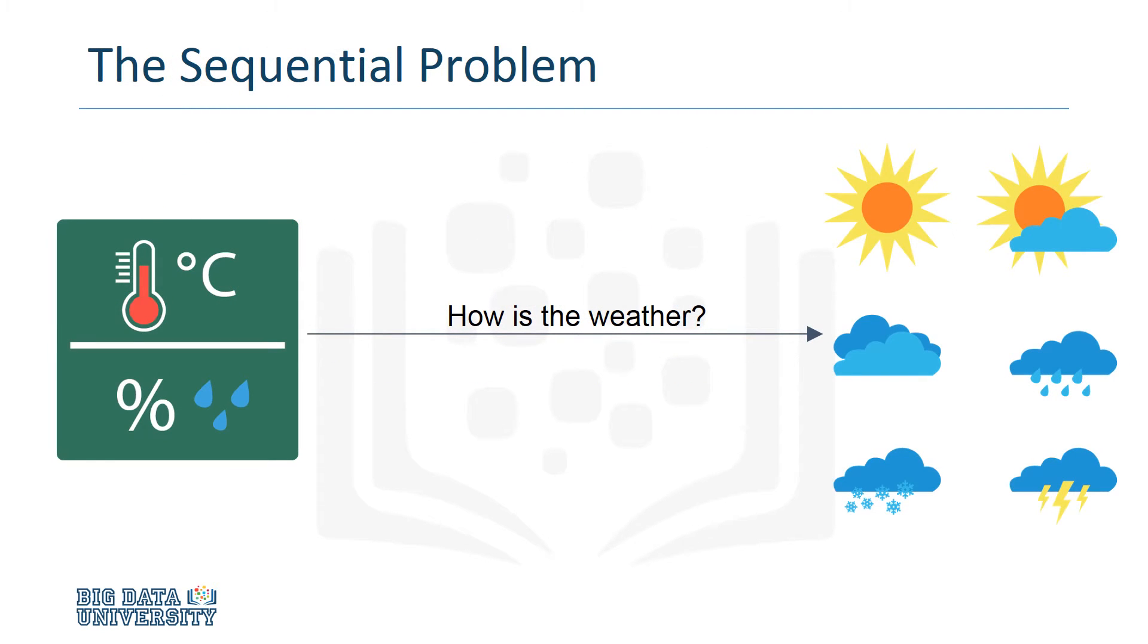To see why, let's consider a non-sequential problem that's well-suited for a basic neural network. Suppose we have a data set that contains temperature and humidity values, and our goal is to build a traditional neural network that can predict if the weather is sunny, rainy, or overcast.